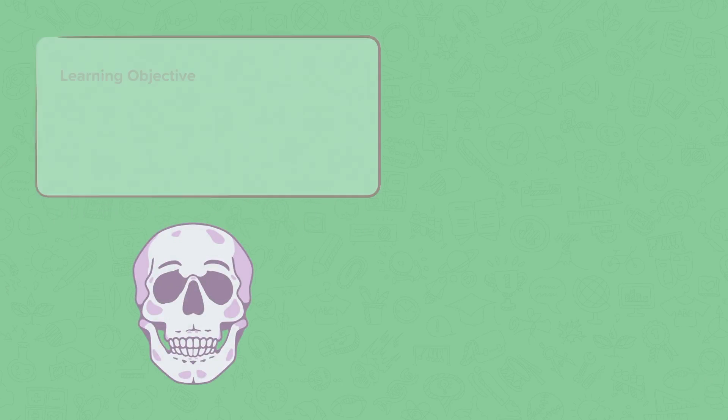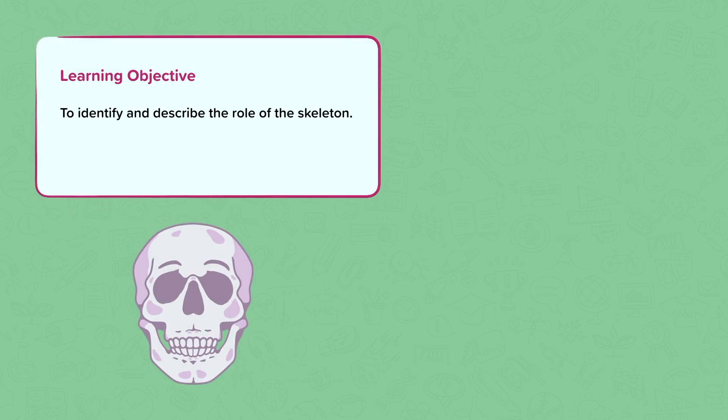This nugget is about the skeleton. In this nugget we are going to identify and describe the role of the skeleton and name some of the main bones in the human body.